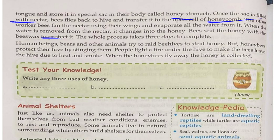When the water is removed from the nectar, it turns into honey. Bees then seal the honey with beeswax. The whole process takes three days to complete. Human beings, bears, and other animals try to raid beehives to steal honey, but honeybees protect their hive by stinging them. People also light a fire under the hive to make the bees leave due to heat and smoke, and then collect the honey.